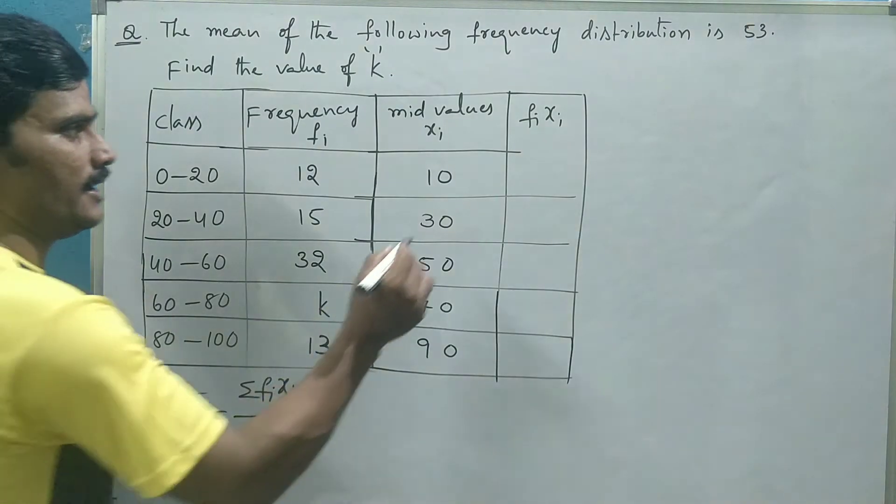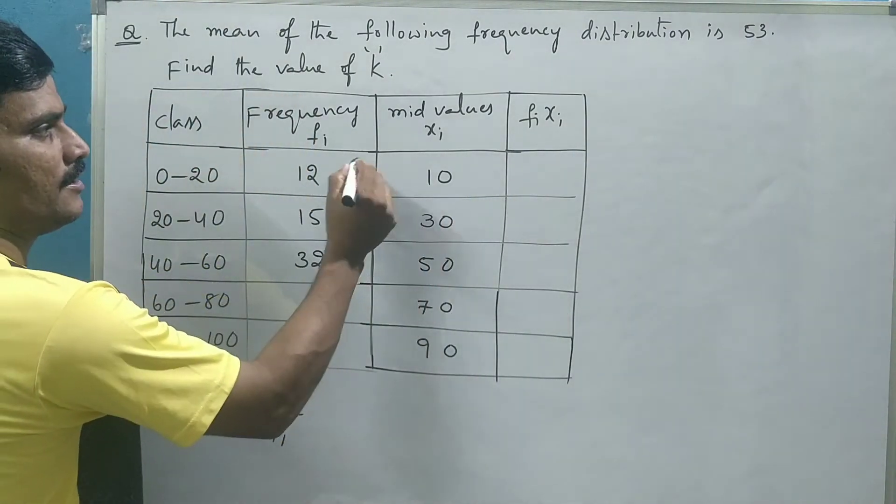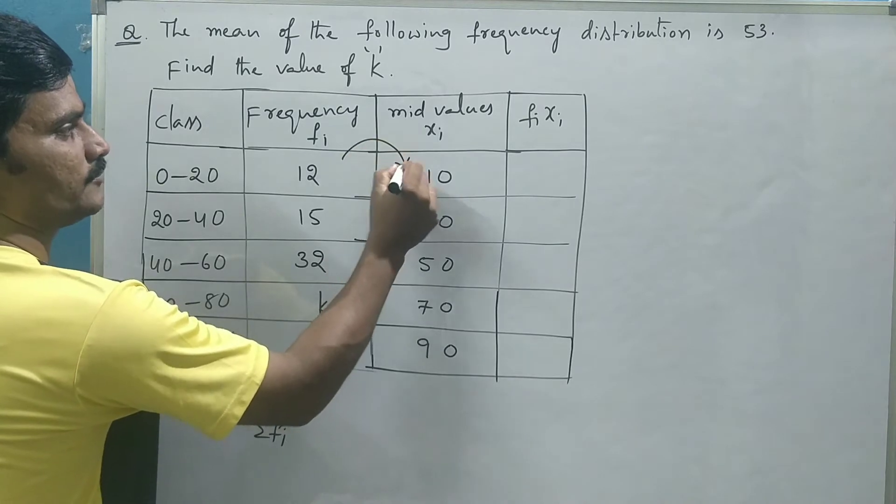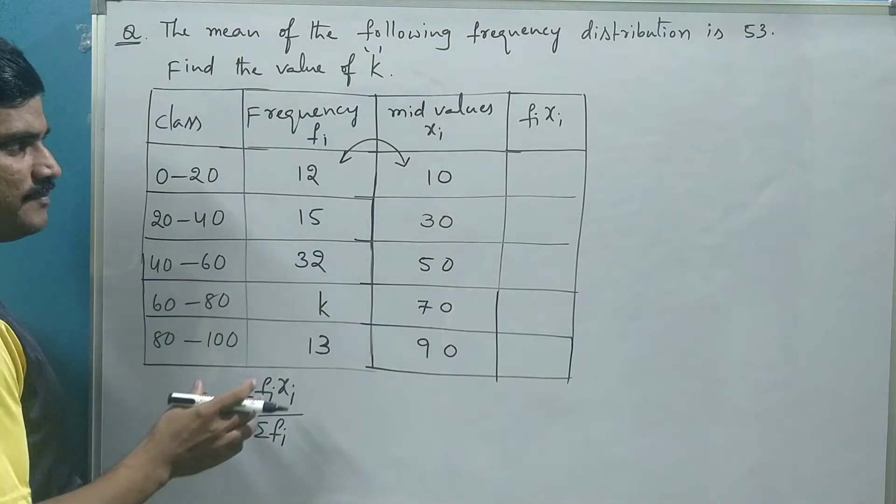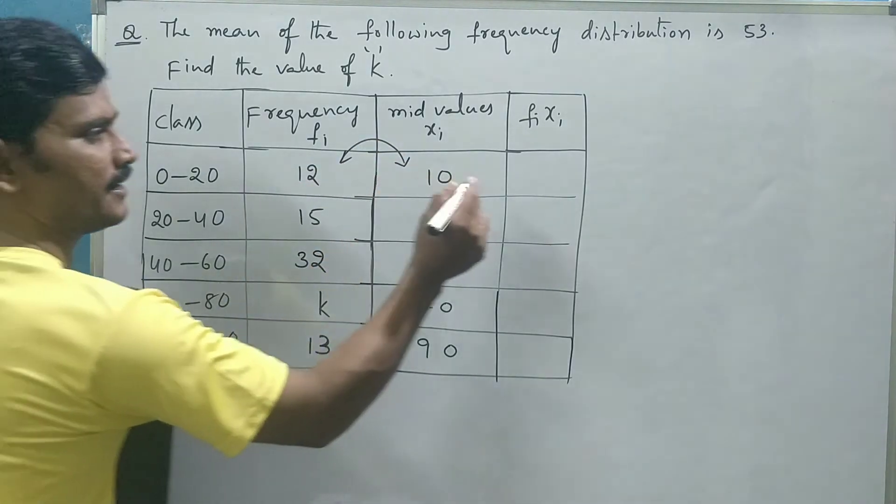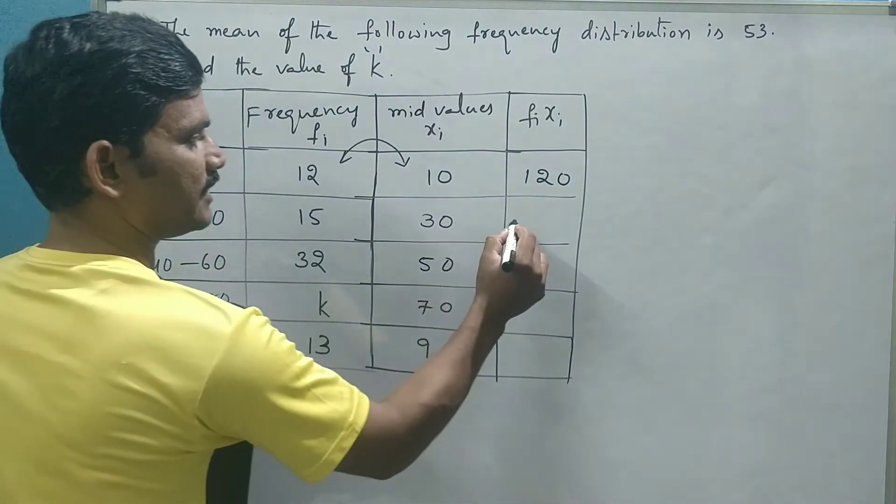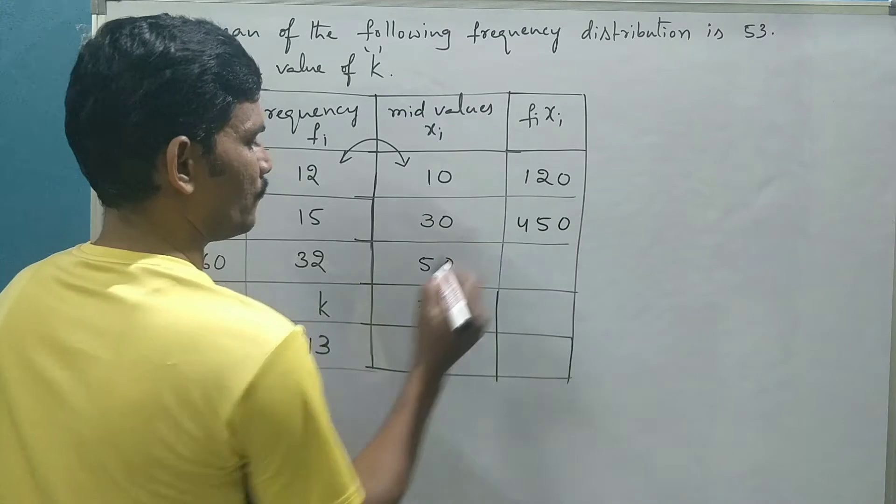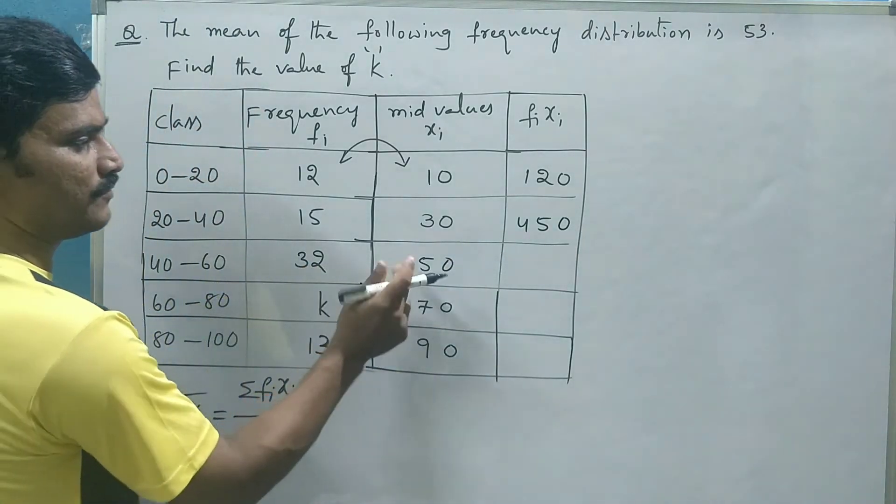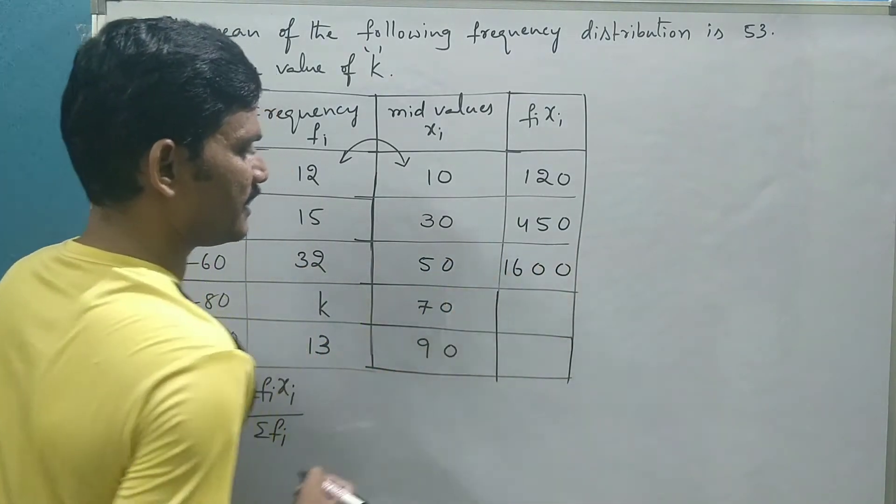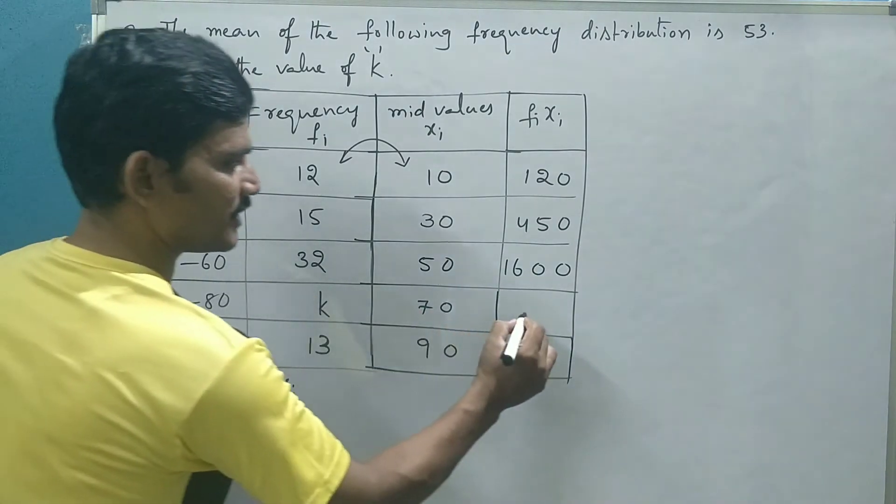Now let us multiply this mid value with corresponding frequency of the class interval. 12 into 10, 120. 15 into 30, 450. 32 into 50, 1600.